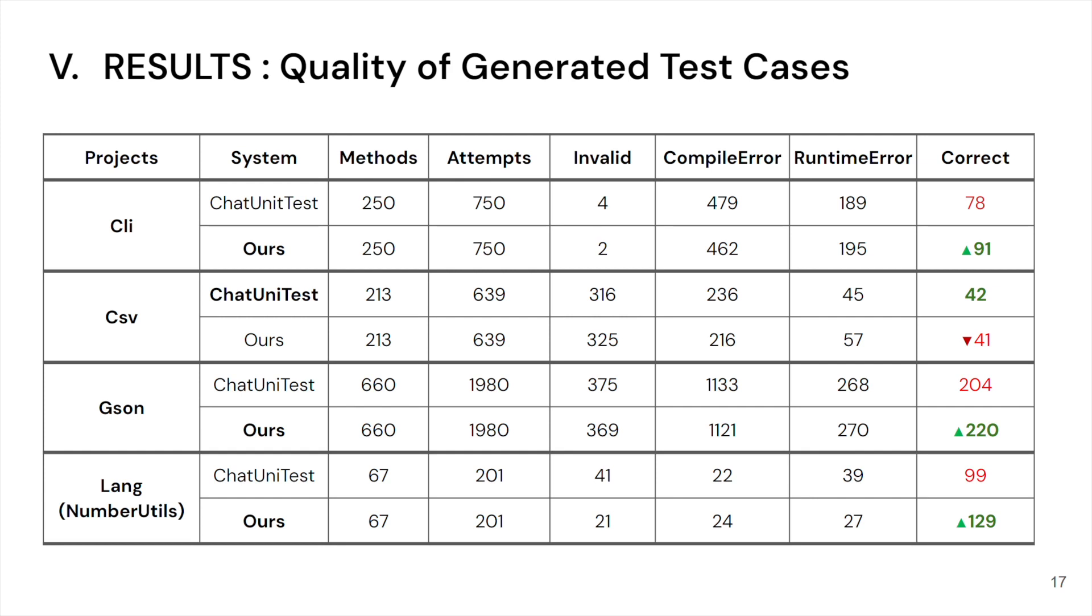As you can see in the table, method means the number of methods for each project that we'll generate the test case for. Since each test case will be generated 3 times, we want to get 3 test cases for each method, so that explains the attempts column. We also record the number of invalid test cases, compile errors, and runtime errors that we encounter. And finally, the most important metric is the number of correct test cases.